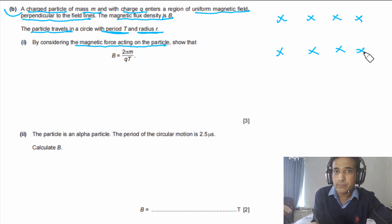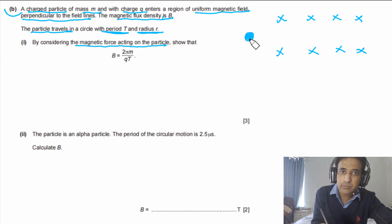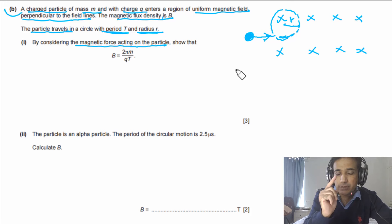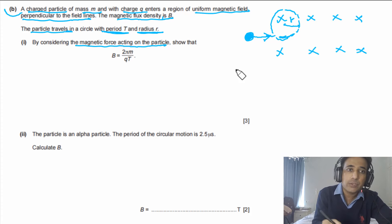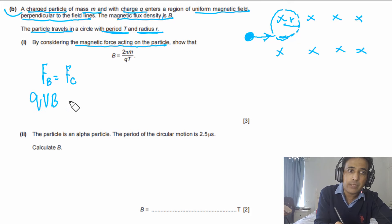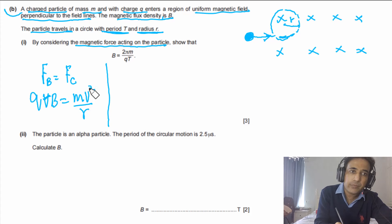We can sketch this: imagine the magnetic field pointing in one direction, and the charged particle entering and doing circular motion with radius r. The hint says to consider the magnetic force acting on the particle. The centripetal force is provided by the magnetic force, so: magnetic force = centripetal force gives qvB = mv²/r. We can cancel one v from both sides, leaving v = rqB/m.